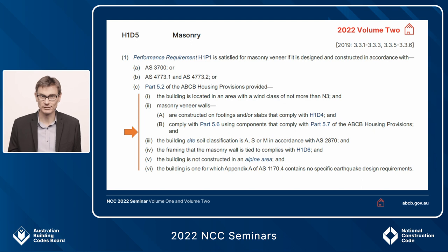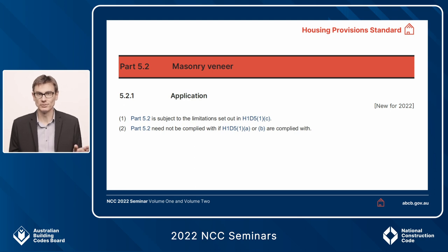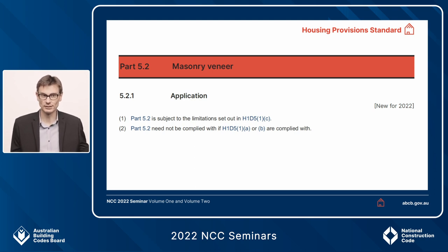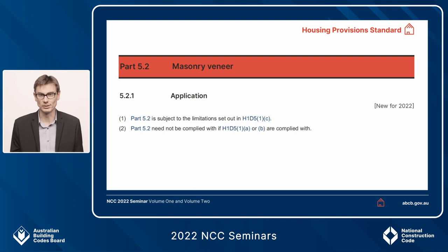In a digital environment, keeping both documents at hand is easy — you just click between the two. And if you do pick up the standard first, there are reminders in the standard itself to point you back to Volume 2. For example, Part 5.2 masonry veneer inside the standard — subclause 1 reminds you that this part is subject to limitations found in Volume 2, specifically H1D5 1C. Subclause 2 also notes that you don't have to use the Housing Provision Standard if you're complying with AS 3700 or the AS 4773 series. So if you pick up the standard first, you'll find links back to Volume 2 when it matters.